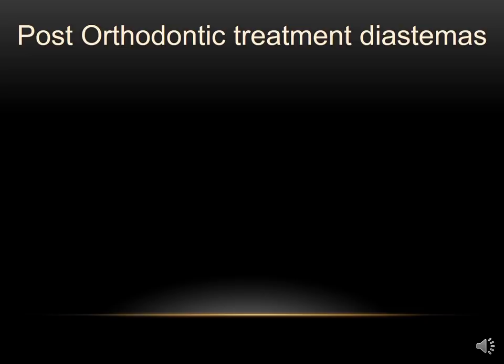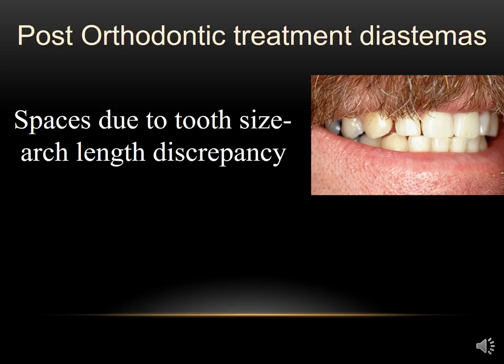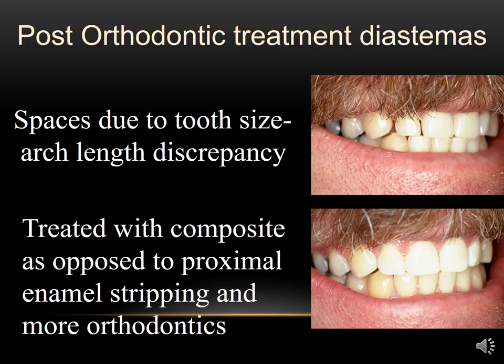This case was orthodontically treated and the lower teeth all came together approximately, but the upper teeth left openings because of a tooth size arch length discrepancy. In order to treat this orthodontically, we would have to strip the mandibular teeth interproximally so they could be moved together and the upper teeth would line up in the occlusion. Instead, we can fix that with direct composites on the upper teeth and no further orthodontics is necessary.